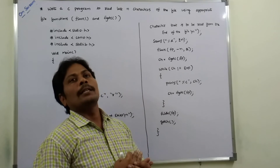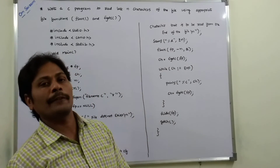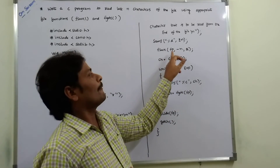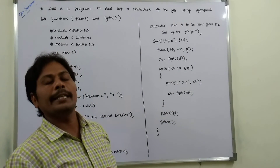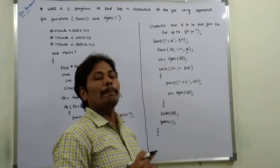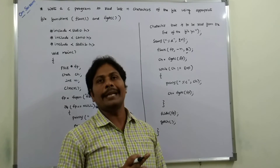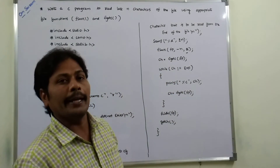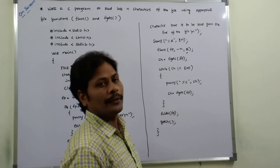After clrscr, the given file is opened in read mode. If fp equals equals null, the file does not exist and we exit the program. Else, printf prompts the user to enter the number of characters to be read from the end of the file. Then scanf reads N. We call fseek(fp, -n, 2) where 2 is the position value indicating the end of the file, moving N characters backward through the file pointer. Then ch is equal to fgetc(fp) to read a character.